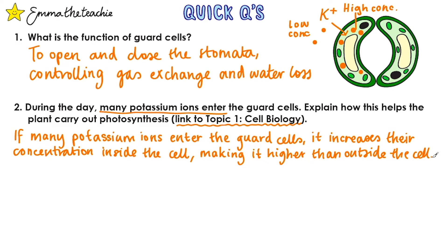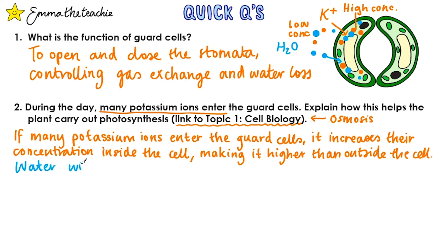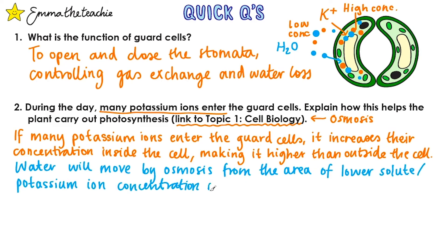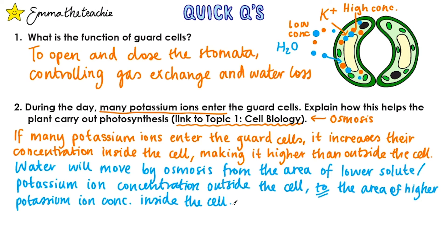If we have a lot of potassium ions or solute ions inside the cell, that's going to affect the movement of water, and water moves by osmosis — that's our link to topic 1. There's a low concentration of solute outside the cell, so water moves inside to where there's a higher concentration of solute. Water will move by osmosis from the area of lower solute concentration outside the cell to the higher concentration inside. You can also discuss the concentration of water: it moves from a high water concentration to a low water concentration inside the cell.